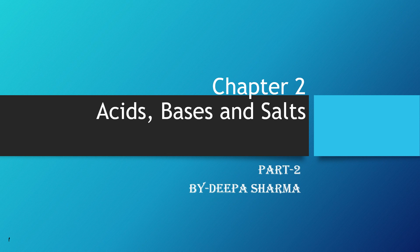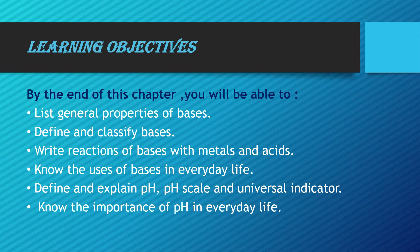Hello students, today we are going to start Part 2 of Chapter 2 of 10th class: Acids, Bases and Salts. The learning objectives of this chapter are: students will be able to list the general properties of bases, define and classify bases as strong and weak, write reactions of bases with metals and acids, know the uses of bases in day-to-day life, define and explain pH, the pH scale and universal indicator, and know the importance of pH in everyday life.